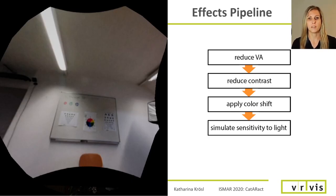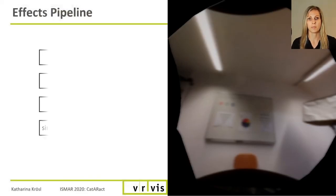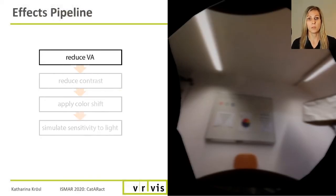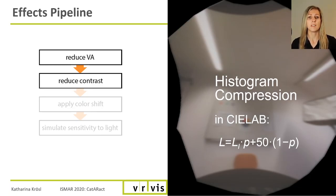We combine different effects to simulate cataract disease patterns. First, we reduce the visual acuity of a user using a Gaussian blur, which leads to blurred vision. Next, we reduce the contrast. We use a histogram compression of luminance values in CIE LAB color space. We do this because this color space is perceptually uniform, meaning the lightness value L represents the perceived luminance of a pixel, and therefore this histogram compression results in a perceptual contrast reduction.